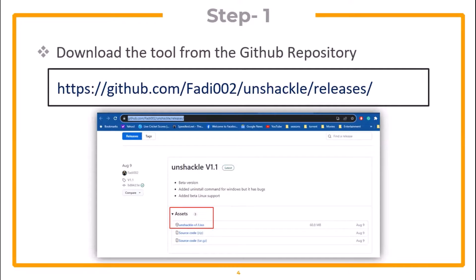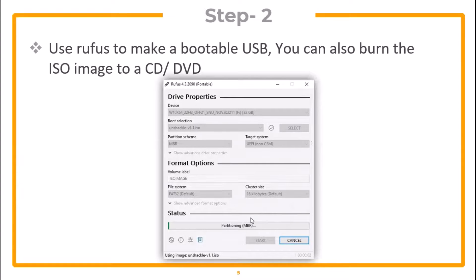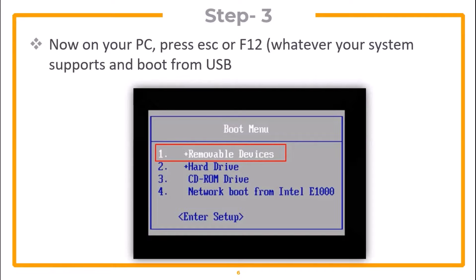In step 1, you need to download the tool from the GitHub repository. Then use Rufus to make a bootable USB. You can also burn the ISO image to a CD or a DVD. On your target PC, press Escape or F12 to open the boot menu and boot from the USB drive.